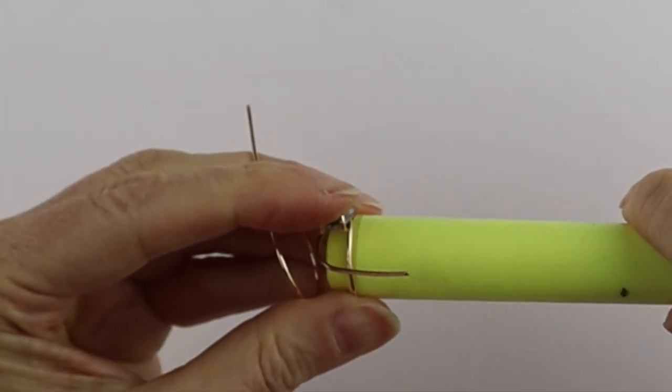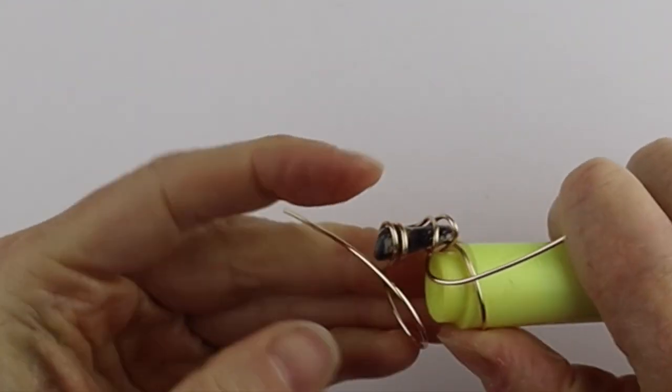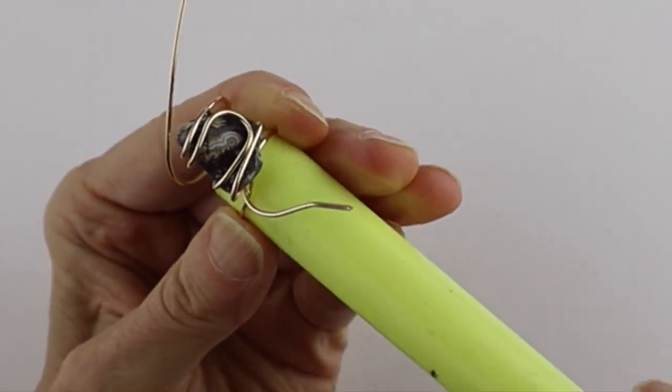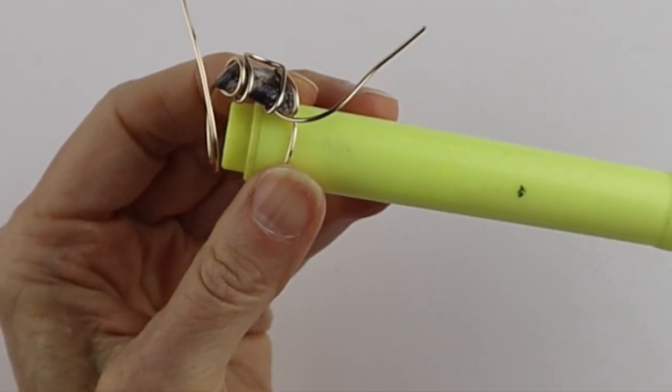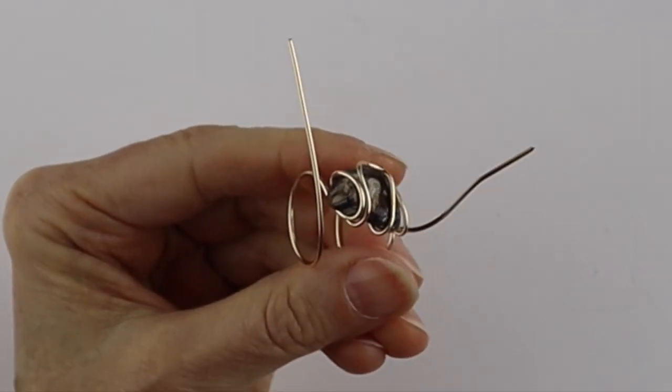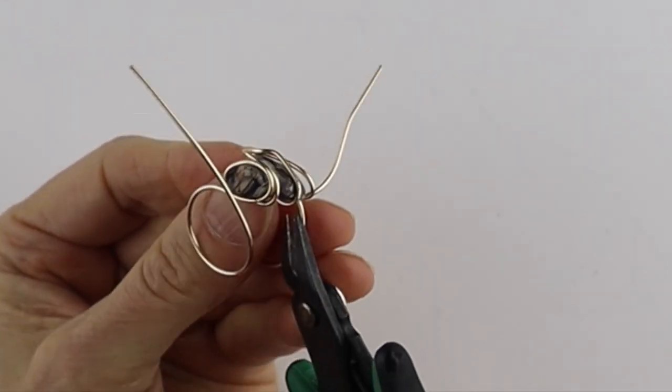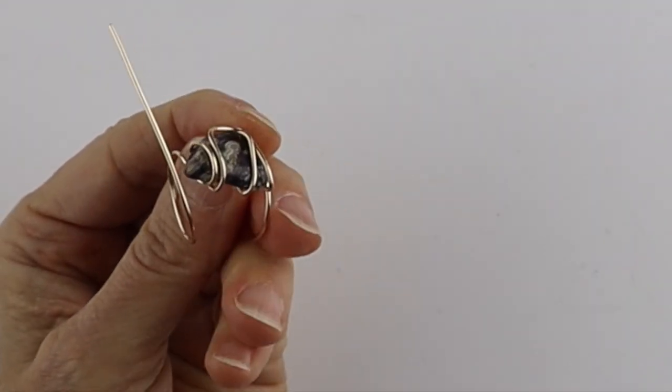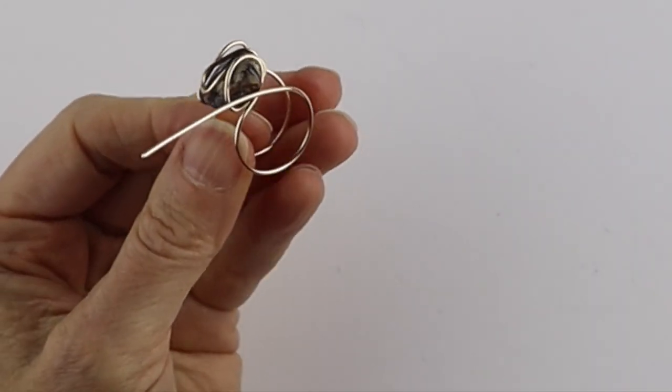And you can put it back on the mandrel and get your flat pliers and just close up that little loop there. And then I'm going to remove it and give it a little clip.